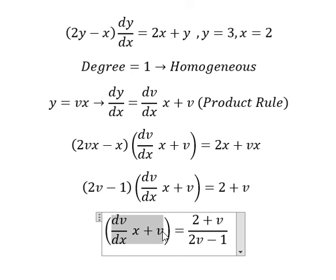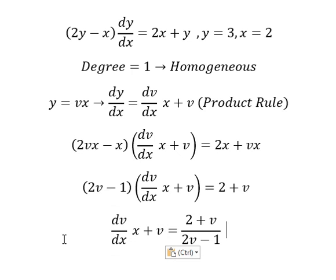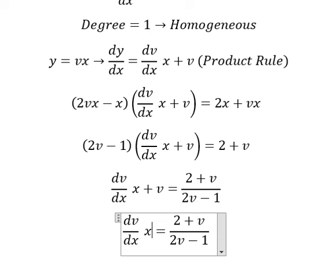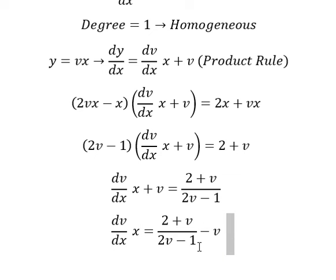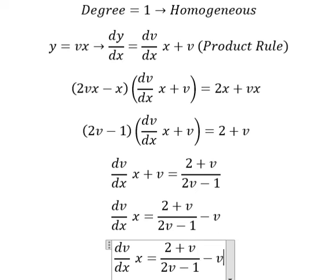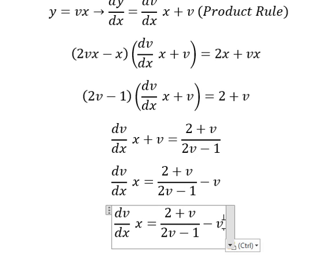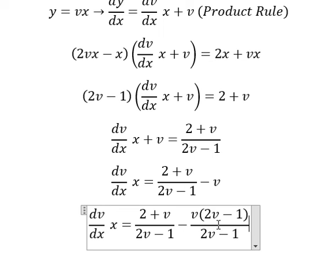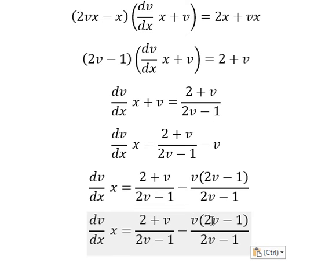Next we divide both sides by 2v minus one. Next we need to open the parentheses. I will put this term on the right and we have negative v. Then we do common denominator.